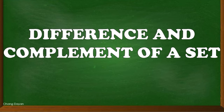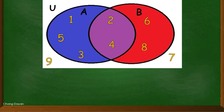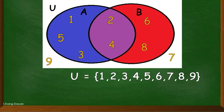Now let us consider this set. Let us identify the universal set. As we all know, the universal set consists of all the elements in a given situation. So from this, the elements of the universal set are 1, 2, 3, 4, 5, 6, 7, 8, 9.